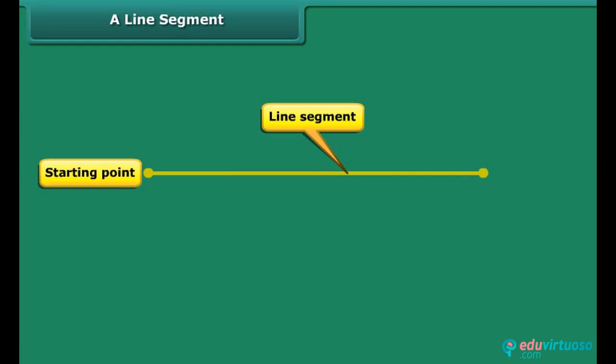Starting and ending of a line segment are its end points. A line segment can be named by naming its end points. We can call this line segment as AB or BA.